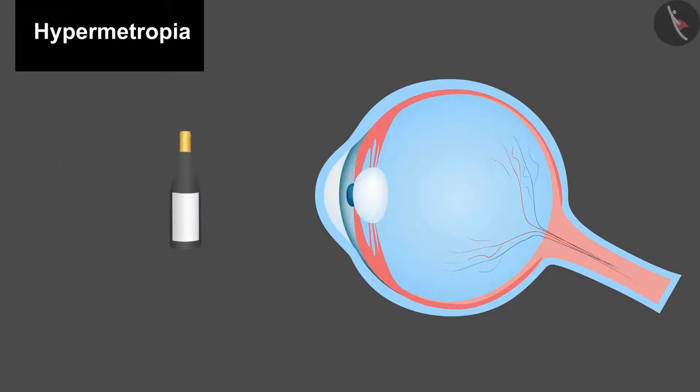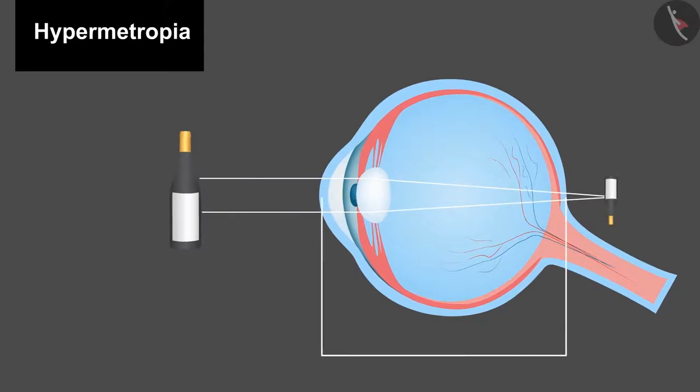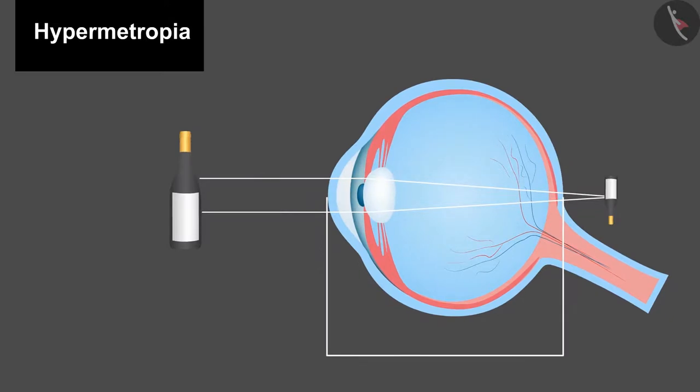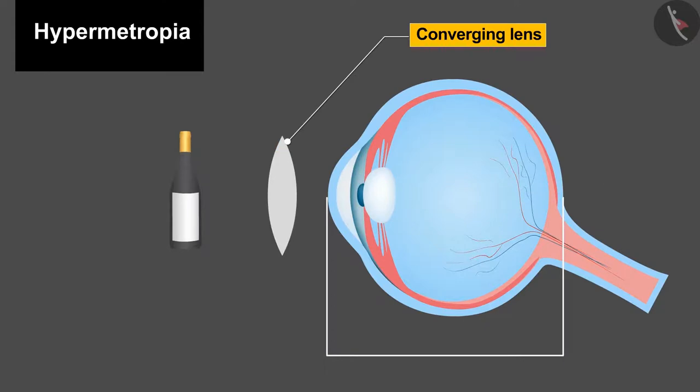In this case, the image is formed behind the retina as the focal length of the lens increases or the eyeball shrinks. The image is formed behind the retina, so a converging or convex lens is taken to converge it to the exact point, making the image on the retina.